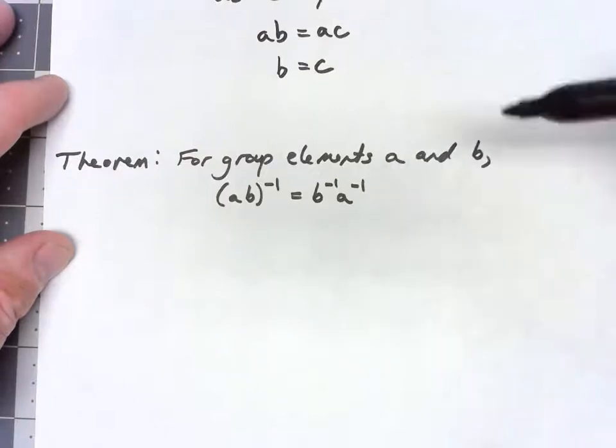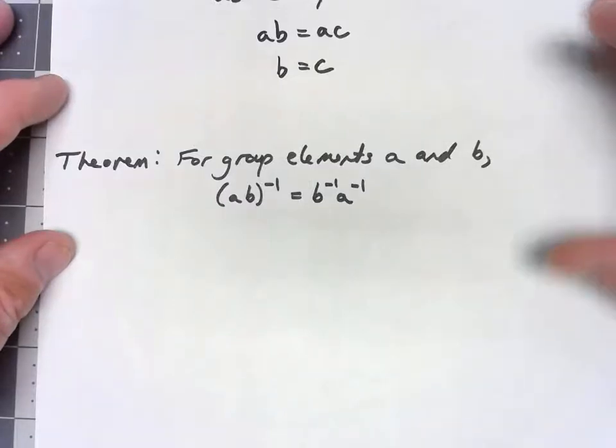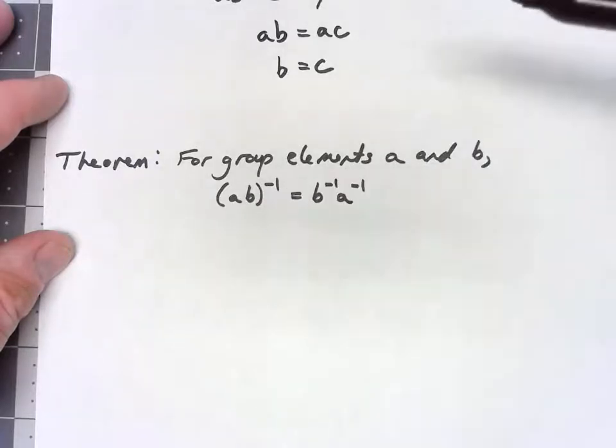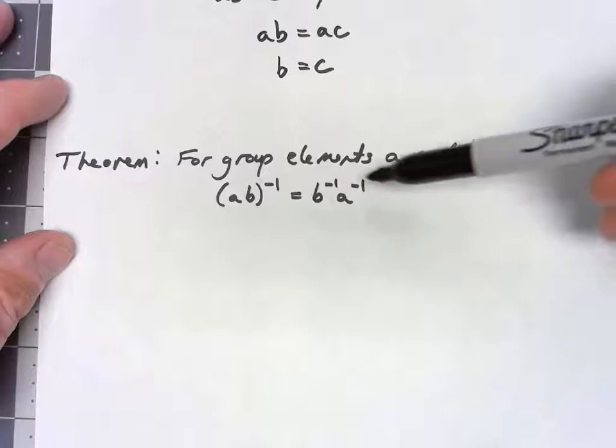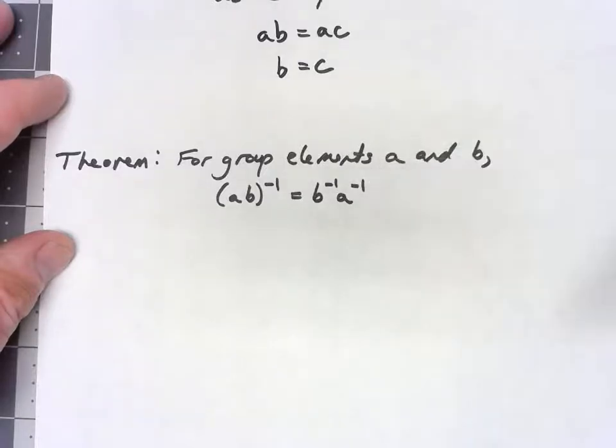The next one, sometimes called the sock shoes property, and I've actually put into the homework for you to think about why that would be. We want to prove that if you have two things multiplied together and taking the inverse, you can take the inverse of each individual elements, but you have to reverse the order.